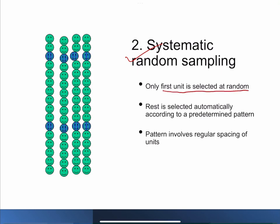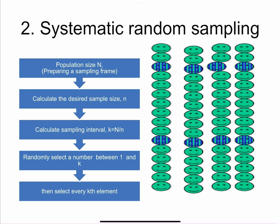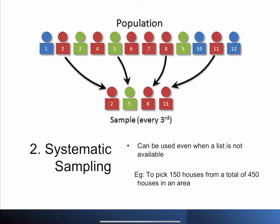Next is systematic random sampling, where we select the first unit randomly and the rest are selected automatically according to a predetermined systematic pattern involving regular spacing of units. For example, after selecting the third unit randomly, every eighth individual is included. To do this, we need to know the population size — not necessarily the full list, just the total number. We then calculate the sampling interval using the formula: population size (N) divided by sample size (n), giving k as the sampling interval. Then we select a random number between 1 and k, and thereafter every kth element is included.